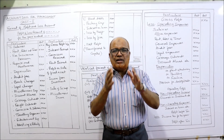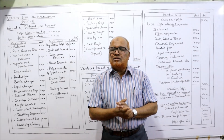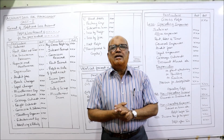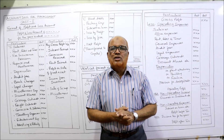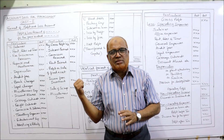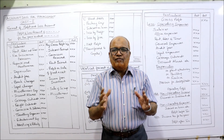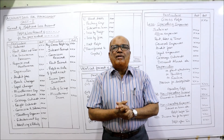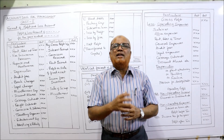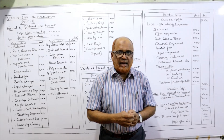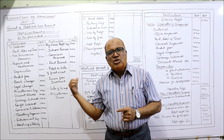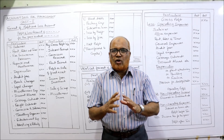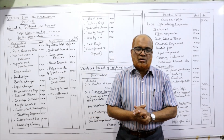The profit and loss account can be prepared either in a traditional horizontal format or in a vertical format, which is the present standard. I am going to explain both formats in this video. If you want perfect knowledge about final accounts, watch this video till the end and take a screenshot of the points written on the board. I will explain all the points regarding the format of the profit and loss account.